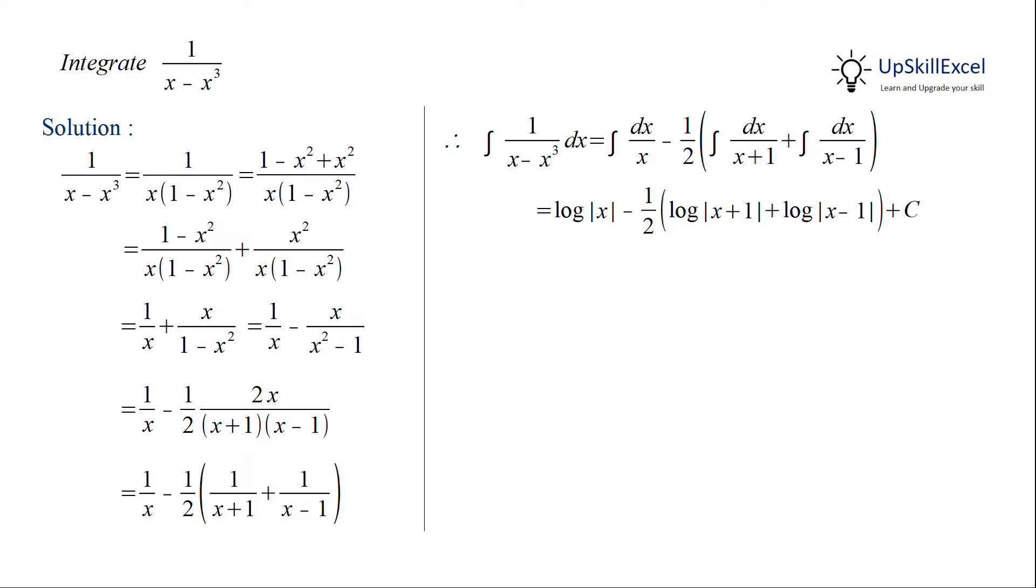Now we will apply the properties of logarithm where sum of log becomes log of the product. So second and third term will become log of absolute of x plus 1 multiply by x minus 1, which can be further rewritten as log of absolute of x square minus 1.